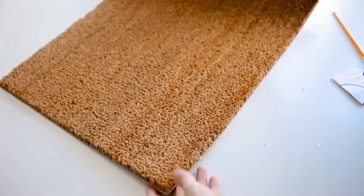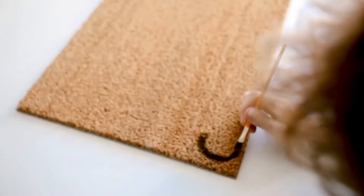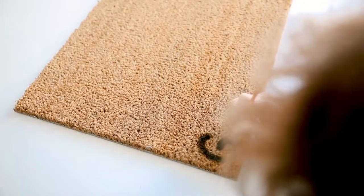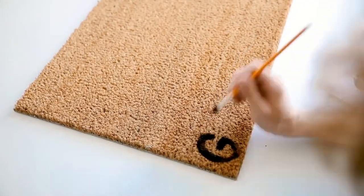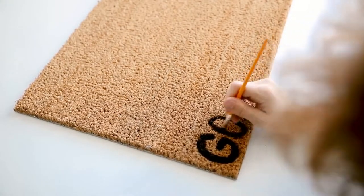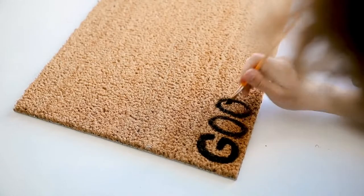Then I flipped the mat over and I'm going to put GOODBYE on the opposite side, that way when your guest leaves they're going to read GOODBYE in their direction when they leave. So it's kind of like a double meaning doormat. I think it's really cute and fun. So I did GOODBYE on this side. Again, I free-handed it.